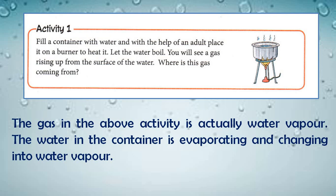Now see Activity 1. Fill a container with water — you have to take water in a container — and after that, with the help of an adult, place it on a burner to heat it. Let the water boil. You will see a gas rising up from the surface of the water. Thodi der mein aap dekhenge ki jaisi jaisi water heat hoga, water ke oopar se vapor nikalne lagengi — gases rise hone lagengi.